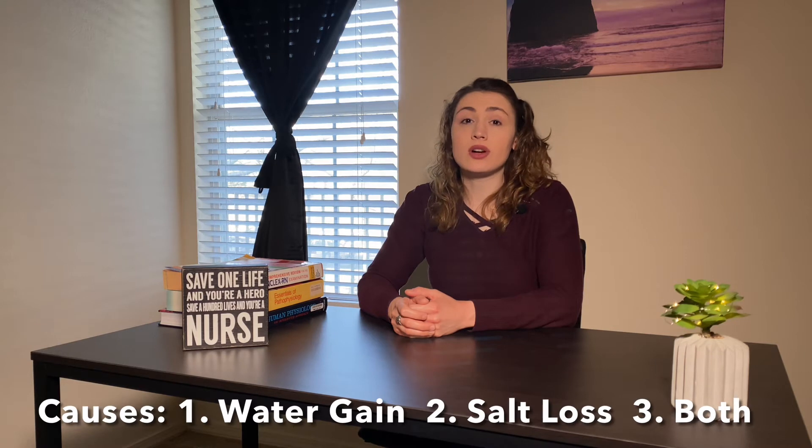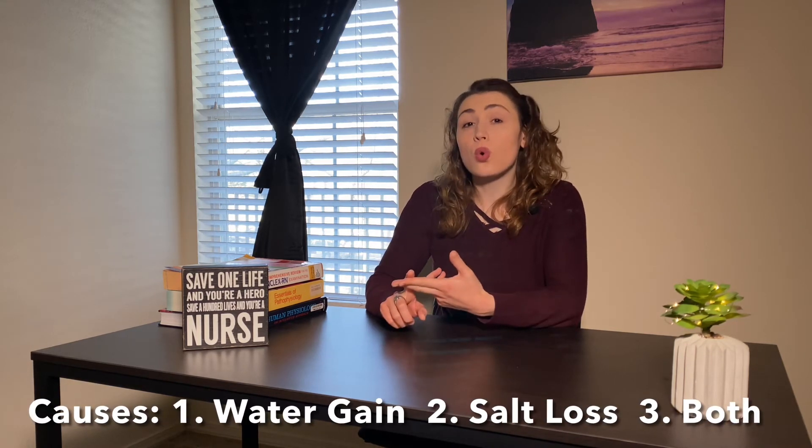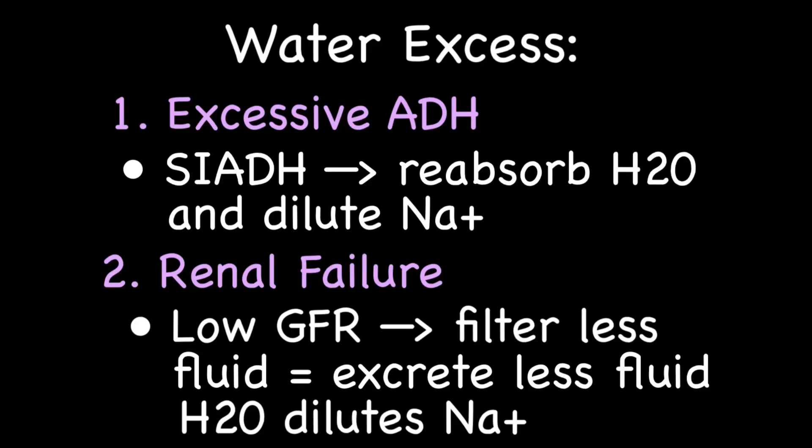Hyponatremia is either caused by water gain, salt loss, or a combination of both. Water gain can result from excess antidiuretic hormone production — called SIADH — an endocrine disease where too much ADH is secreted, causing water reabsorption into the blood, which dilutes sodium. The second cause is renal failure: a falling GFR means less fluid filtered and excreted, so the retained fluid dilutes the sodium and causes hyponatremia.